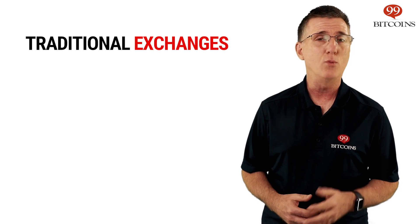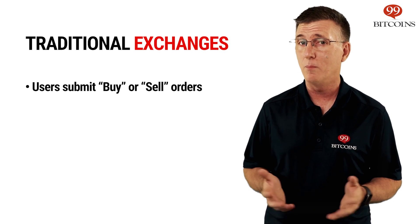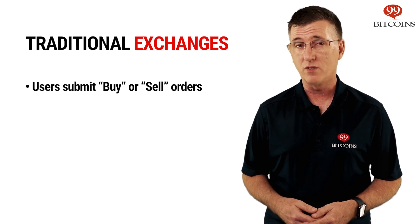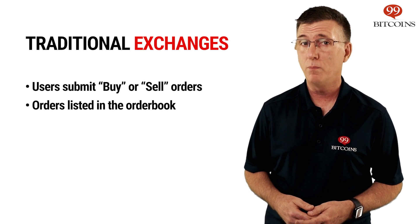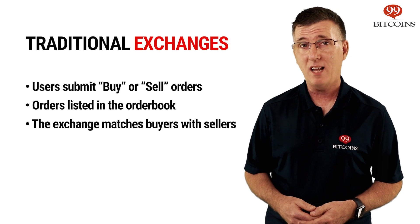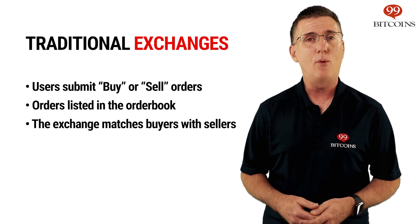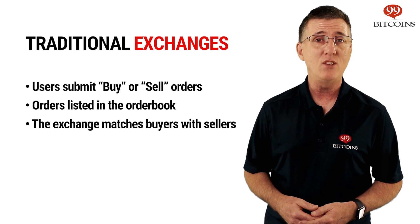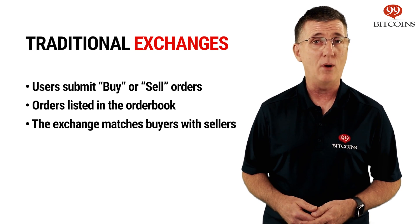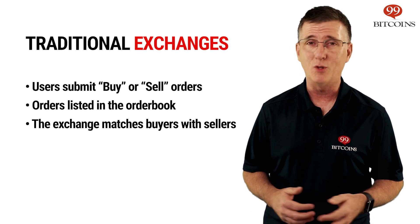On a traditional exchange, when users want to buy or sell a certain cryptocurrency, they submit a buy or sell order. All of these orders are recorded in the exchange's order book. Once there's a match between a buyer and a seller, a trade is conducted. If you want to learn more about exchanges and trading, you can check out our What is Bitcoin Trading video, which we'll link to below.